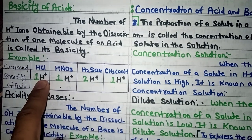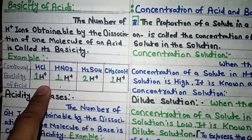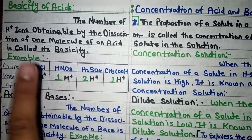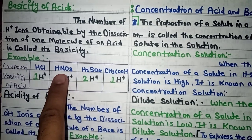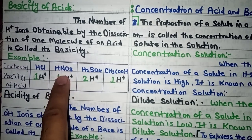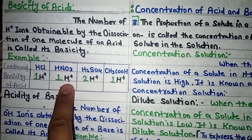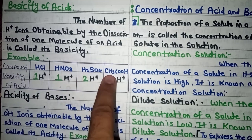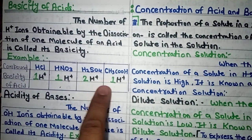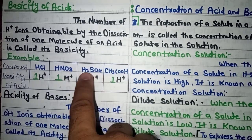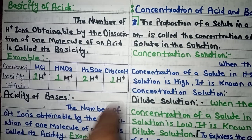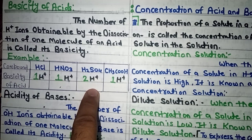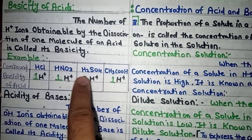For HCl: it has only one hydrogen, so its basicity is 1. Same for HNO3 (nitric acid) — it also has only one hydrogen molecule, so basicity is 1. For H2SO4: this is a strong acid. When dissociated, first it gives HSO4⁻ plus H+, then again dissociating gives a second H+. So H2SO4 gives 2 molecules of hydrogen, giving a basicity of 2. It completely dissociates because it is a strong acid.